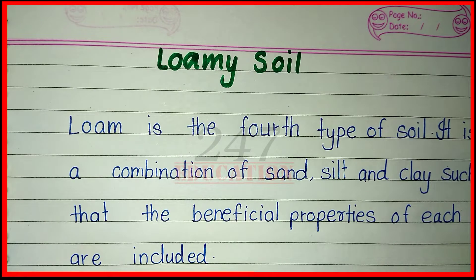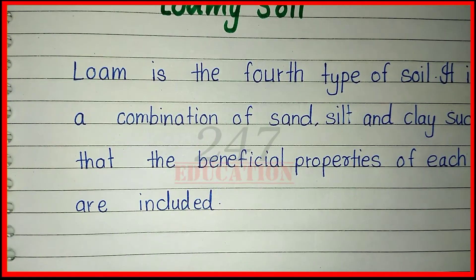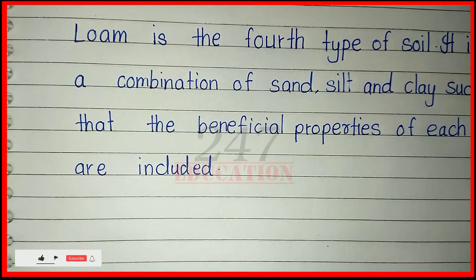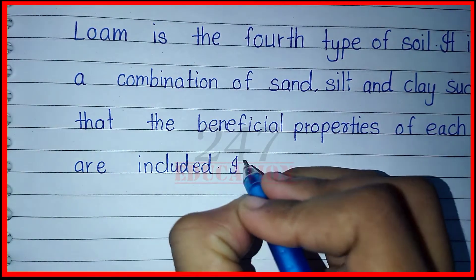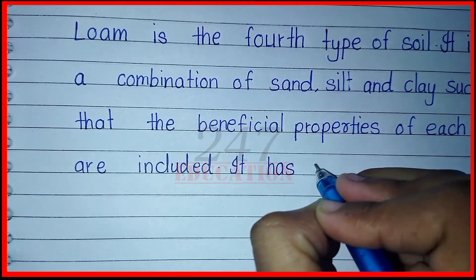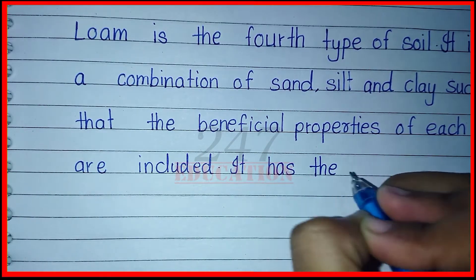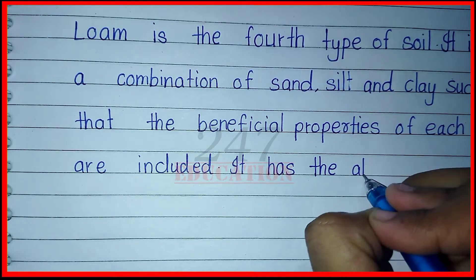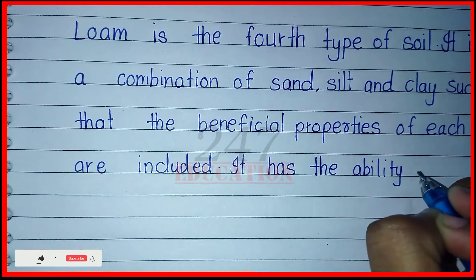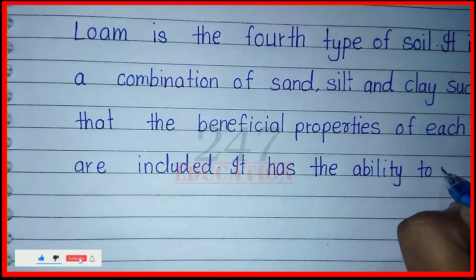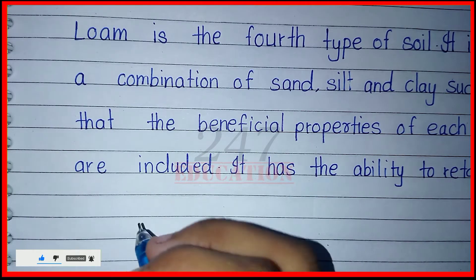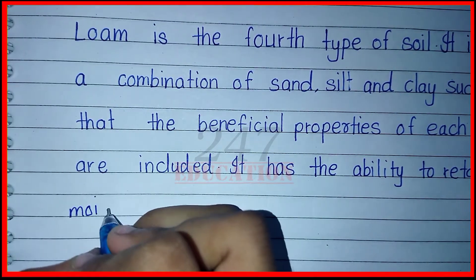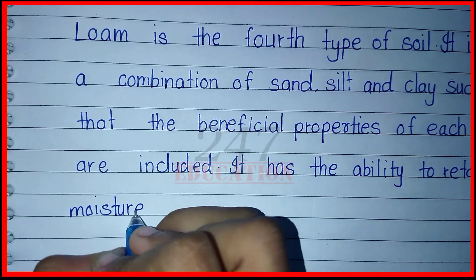Loam is the fourth type of soil. It is a combination of sand, silt, and clay such that the beneficial properties of each are included. It has the ability to retain moisture.